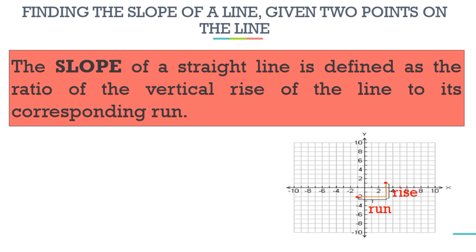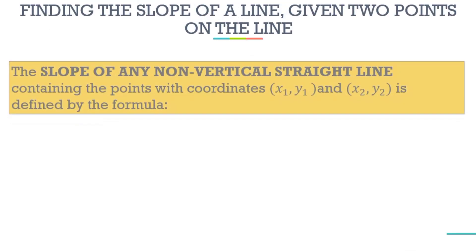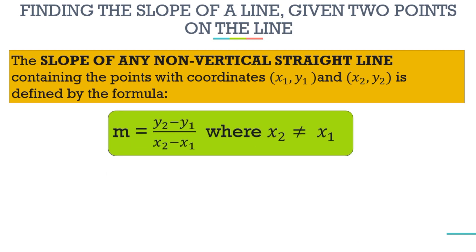The slope of a straight line is defined as the ratio of the vertical rise of the line to its corresponding run. So slope is equal to rise over run, or change in y over change in x. The slope of any non-vertical straight line containing points with coordinates x₁, y₁ and x₂, y₂ is defined by the formula: m = (y₂ - y₁) / (x₂ - x₁), where x₂ should not equal x₁.